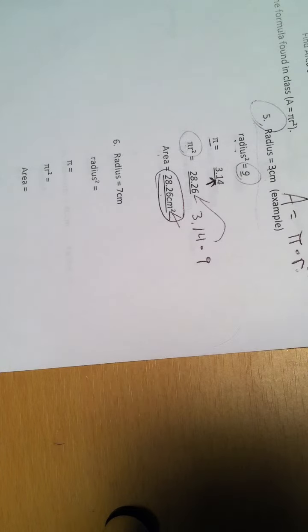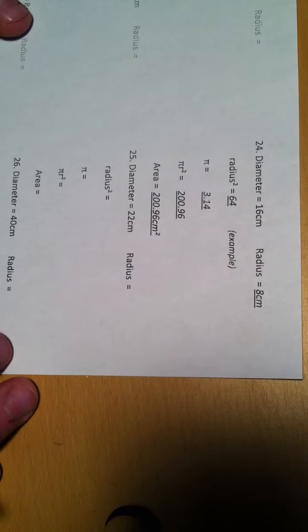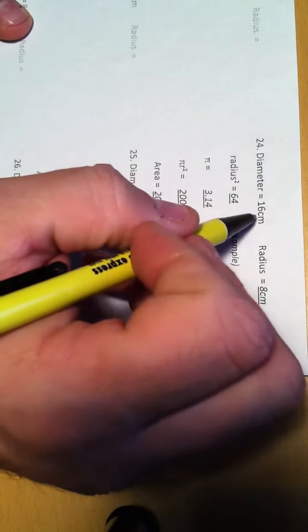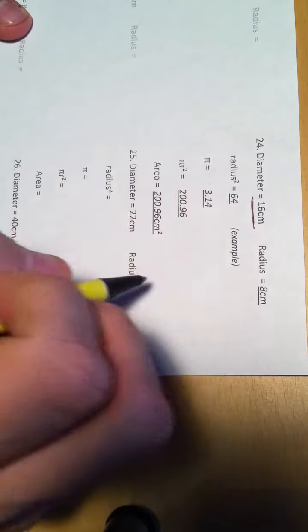Now, there are 16 questions like that, I think. And then, there are 16 questions where we're not given the radius, we are given the diameter. So, the first step, given the diameter, we have to figure out what is the radius.